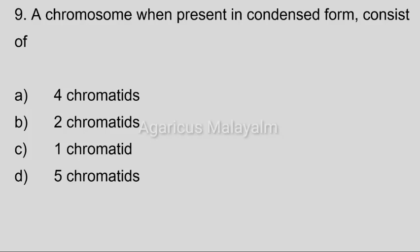Ninth question. A chromosome when present in condensed form consists of: Option A, 4 chromatids; Option B, 2 chromatids; Option C, 1 chromatid; Option D, 5 chromatids. Correct answer: Option B, 2 chromatids.